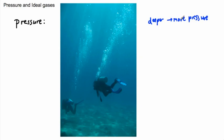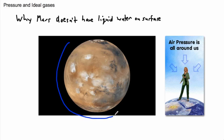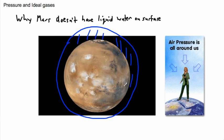A really interesting question is: why doesn't Mars have liquid water on its surface? The planet Mars used to have liquid water because a long time ago it had a much thicker atmosphere. Right now it still has an atmosphere — a little envelope of gas going all the way around the planet.